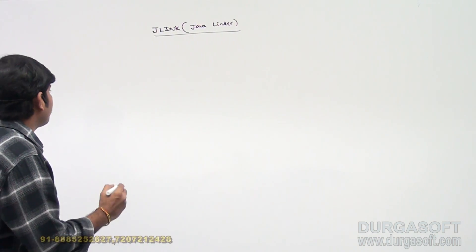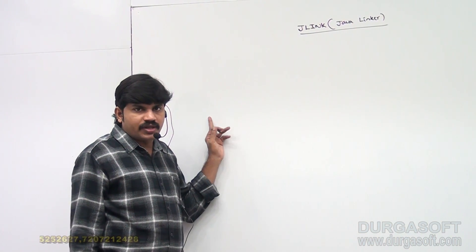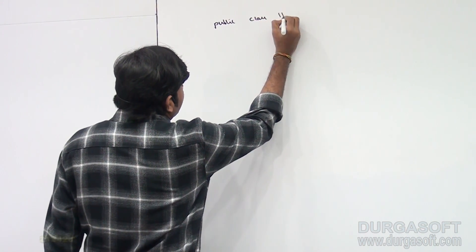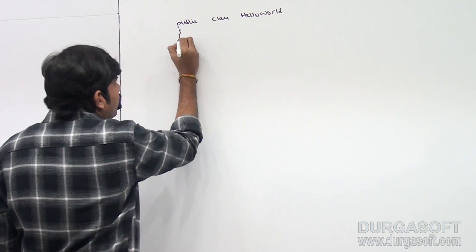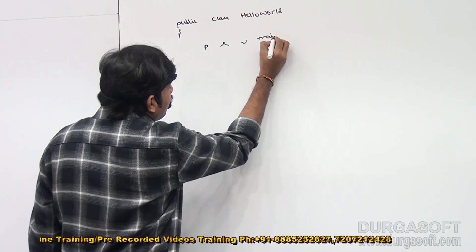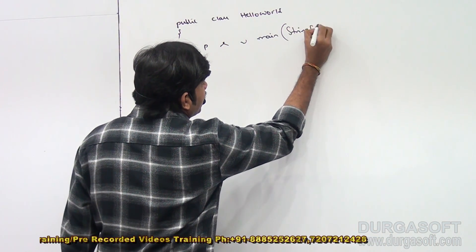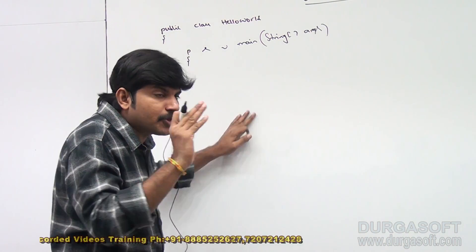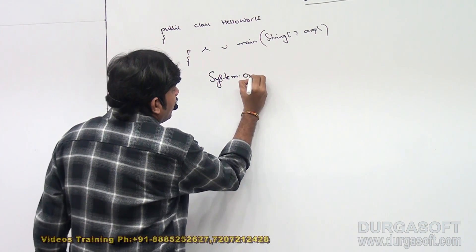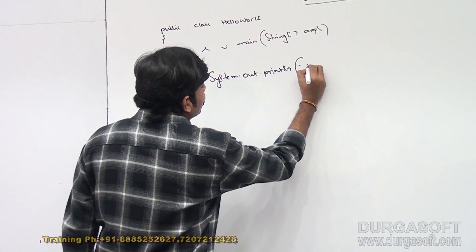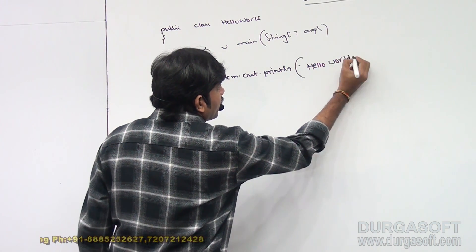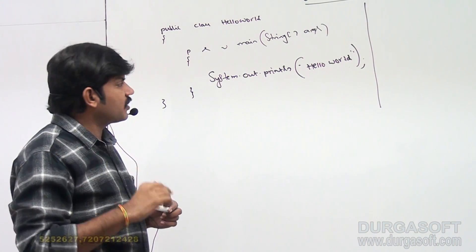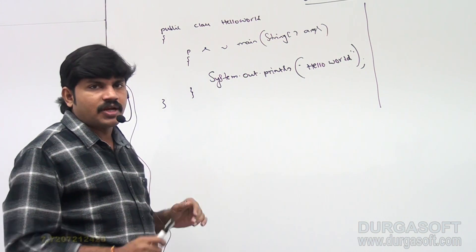Let me take a small example — a Hello World program. We have a public class HelloWorld with a public static void main method, String array, and System.out.println inside it. This is the simple Hello World program we are going to use as our example.